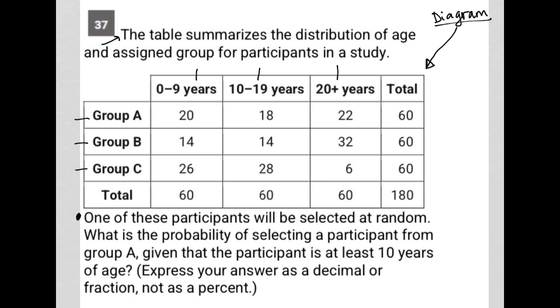The question goes on to say, one of these participants will be selected at random. What is the probability? So I always take note whenever I read that word to recognize that the word probability is always going to give me an answer that is a fraction, in which case the numerator is what I want, and the denominator is what I'm choosing from, which I'll just call total in this case. The total number of data points that I'm choosing from.